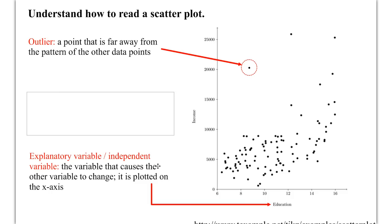When we make that assumption, we would call education the explanatory variable, also known as the independent variable. This is the variable that causes the other one to change, and we plot it on the x-axis. So when we plot it down here, the statement we're making is that education causes income to change.